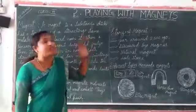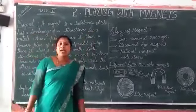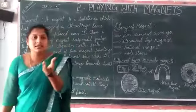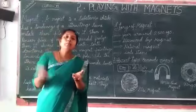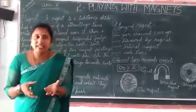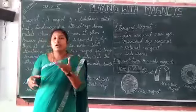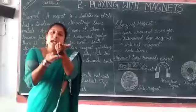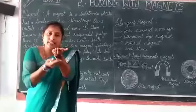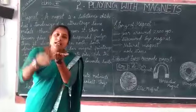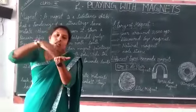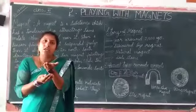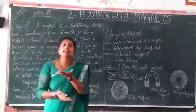What is the lesson, children? Playing with the magnet. Do you all enjoy playing with magnets? You will take some magnets, attach some pins, and enjoy it. For example, you will spread some iron filings on a paper, keep the magnet underneath, and you can see the iron filings moving on the paper. So you will enjoy playing with the magnet. Let us now learn about magnets in detail.